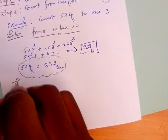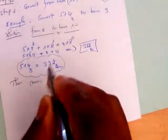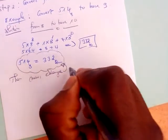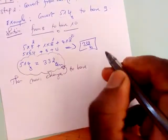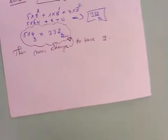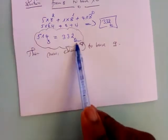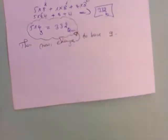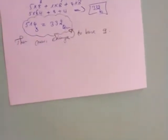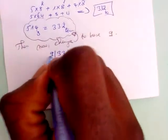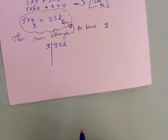Then now, change this one to base 9. What we need here is to change from base 10 to base 9. And remember that from base 10 to any base, we are dealing with division. We are dividing. Now, let's have 332 divided by 9. If we divide this by 9,